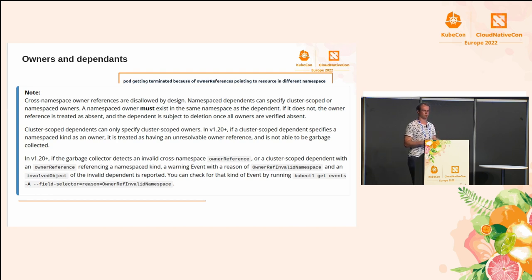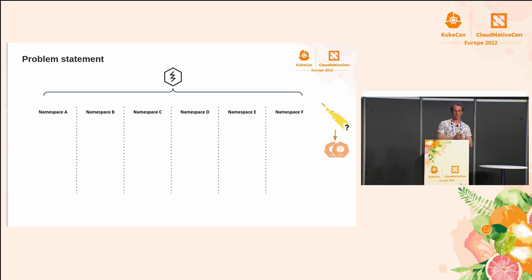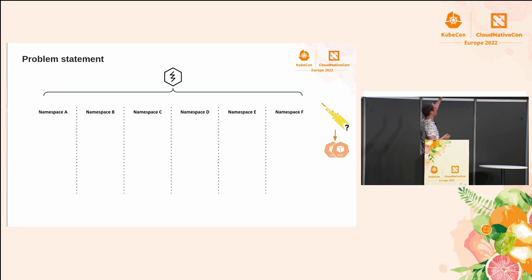So this is what we're going to implement — it's disallowed by design, and we're going to try to bend Kubernetes. Why? We have an operator — a cluster-scoped controller working at the cluster-scope level, which is normal. And we have users in different namespaces.